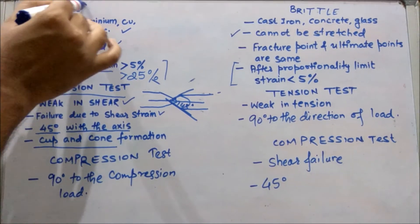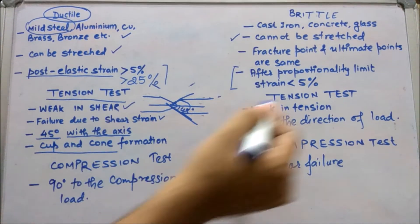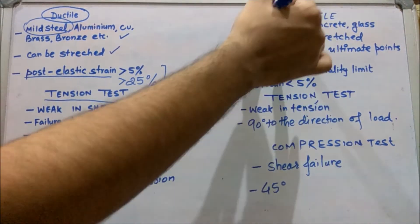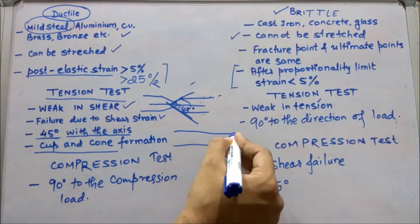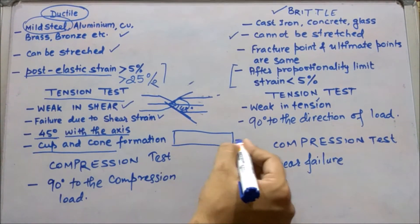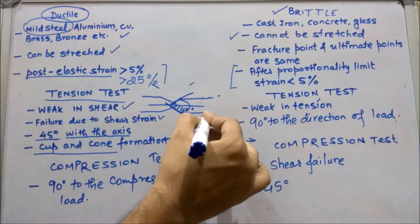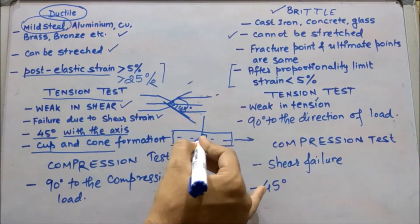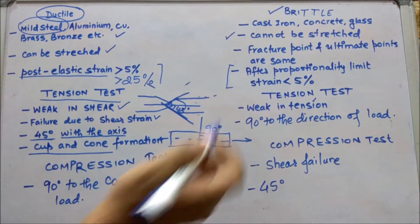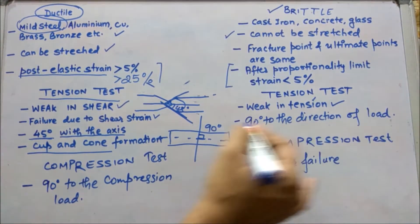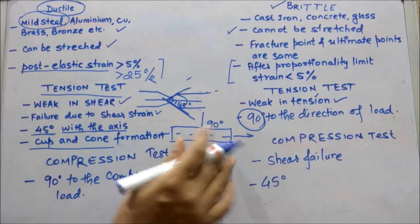When the tensile test is performed on brittle material, they are weaker in tension. The breakage occurs at 90 degrees to the axis of the load applied. So brittle materials fail at 90 degrees to the direction of load in a tension test.